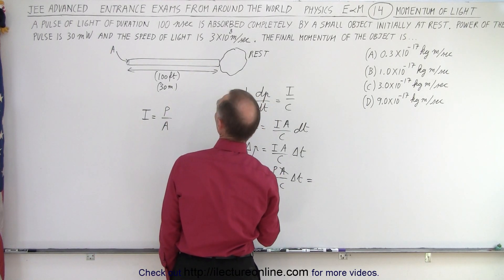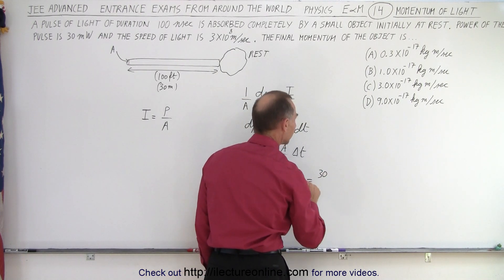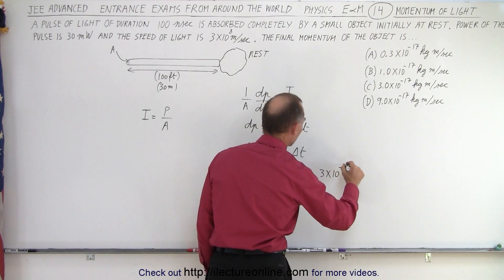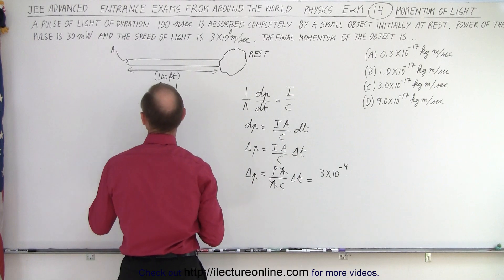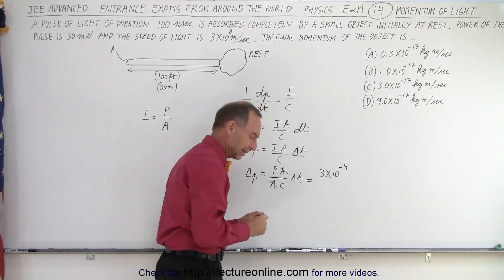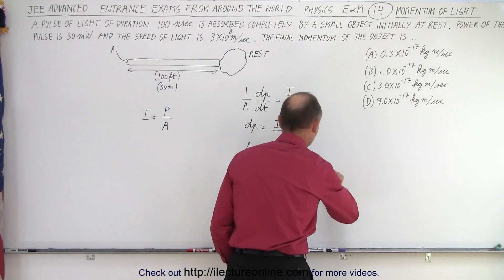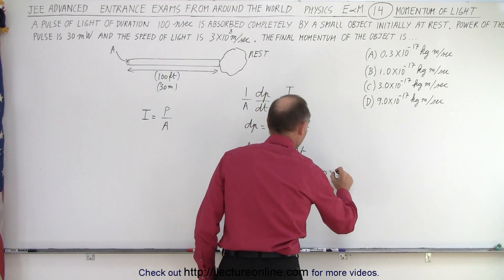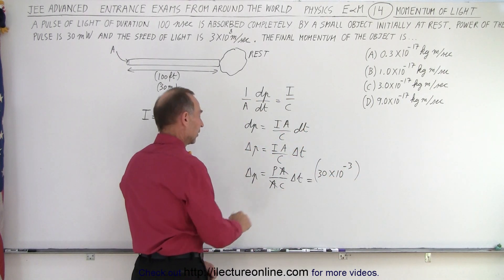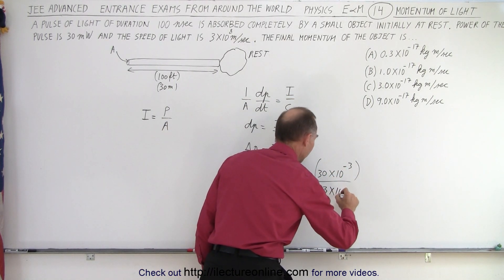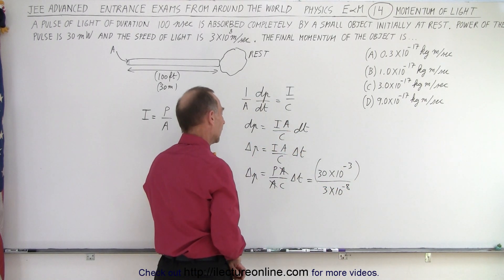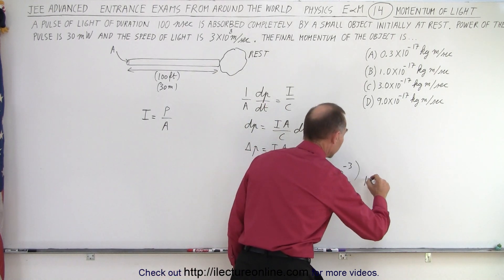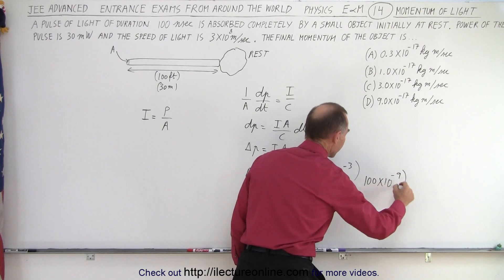So in that case, the power is equal to 30 milliwatts. Let's write it as 30 times 10 to the minus 3. Speed of light, 3 times 10 to the 8. And then the delta t is 100 nanoseconds, that would be 100 times 10 to the minus 9.